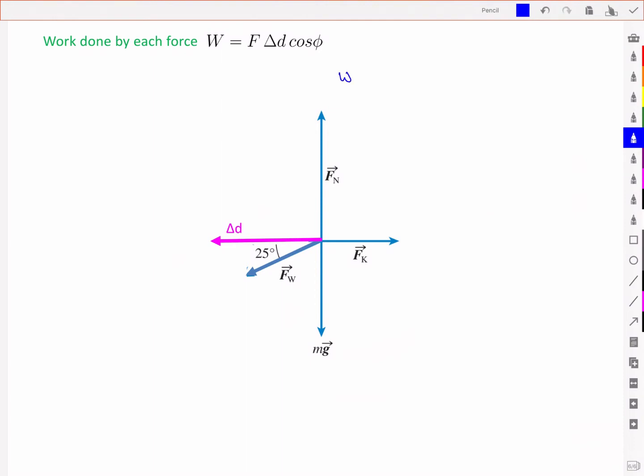Let's start with the work due to the normal force. This will be that normal force times the displacement delta D, as I've called it here, times the angle between those two, and the angle here is 90 degrees. So I've got the cos of 90 degrees, which I know is equal to zero, and so I've got zero work being done by the normal force, not surprising.